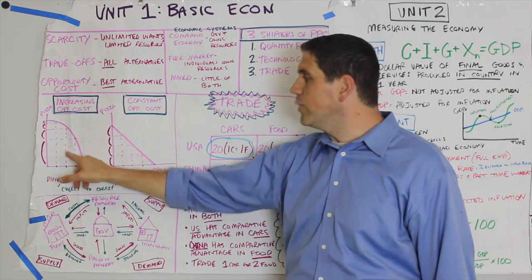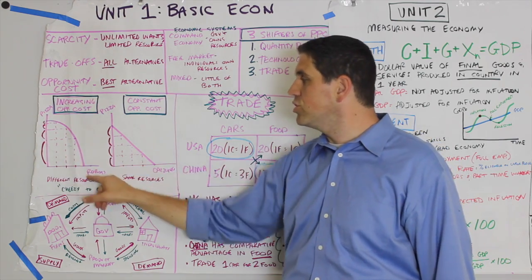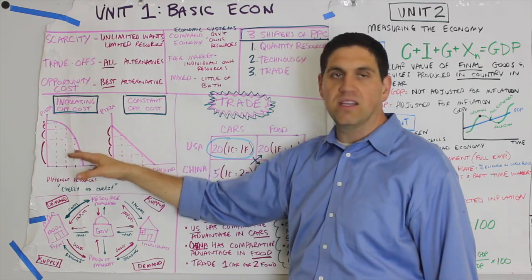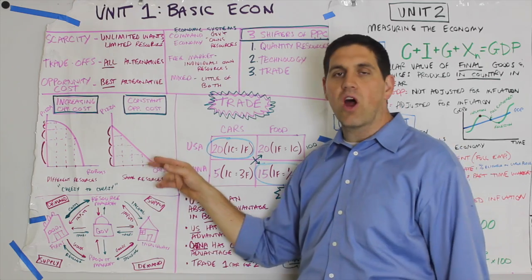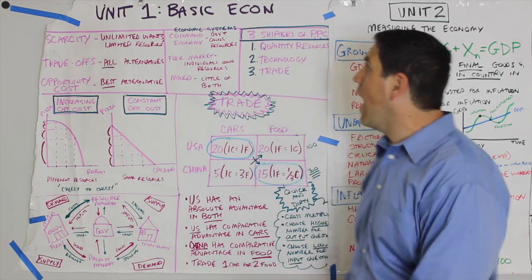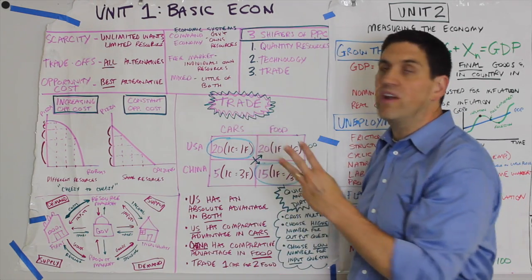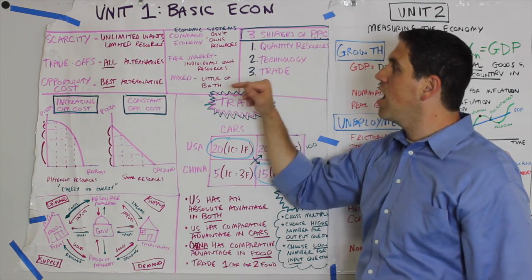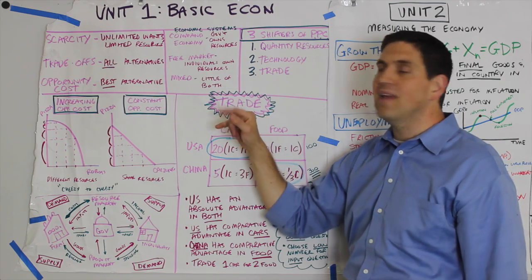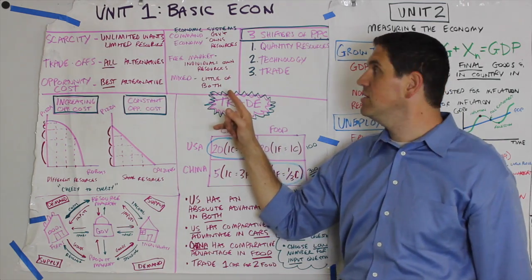With the bowed-out curve, the resources produced in two products are completely different. With the straight-line curve, the resources are very similar. Now we're going to talk about economic systems. There are three different types: command economies, free market, and mixed economies.